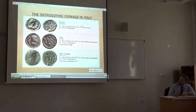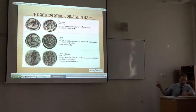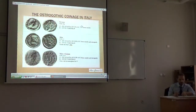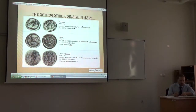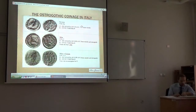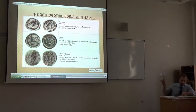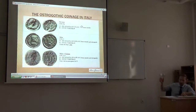In the coinage of Ostrogothic Italy, Metlich identifies some quarter siliquae with Anastasius on the obverse and Theoderic monogram on the reverse, in several small stylistic variations. These coins were issued in Ravenna, Milan — Mediolanum — and in Ticinum. All these coins listed in the book have a complete reverse legend, apparently always correctly rendered as Invicta Roma, although sometimes with different letter forms.